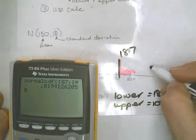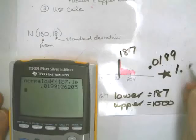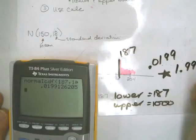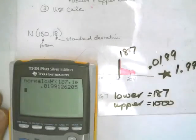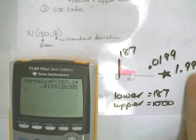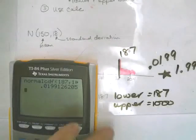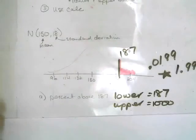So that means 1.99% of my data is above 187. You could round it to 2%, since it's very close to that. So again, for that problem I started by figuring out where I was going to shade, and then I figured out my upper and lower bounds.